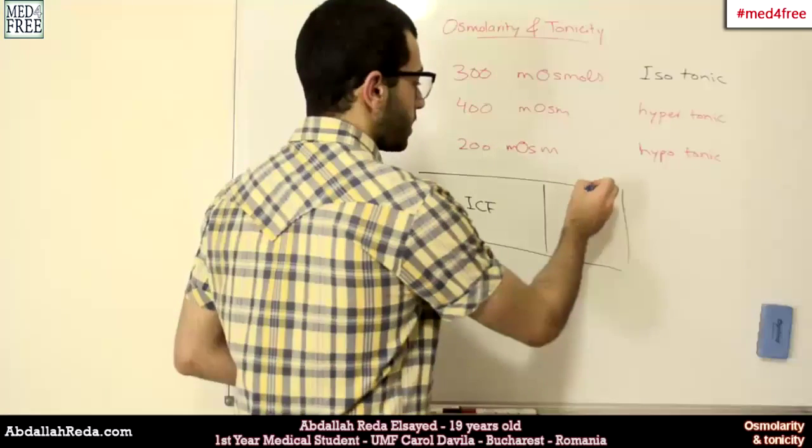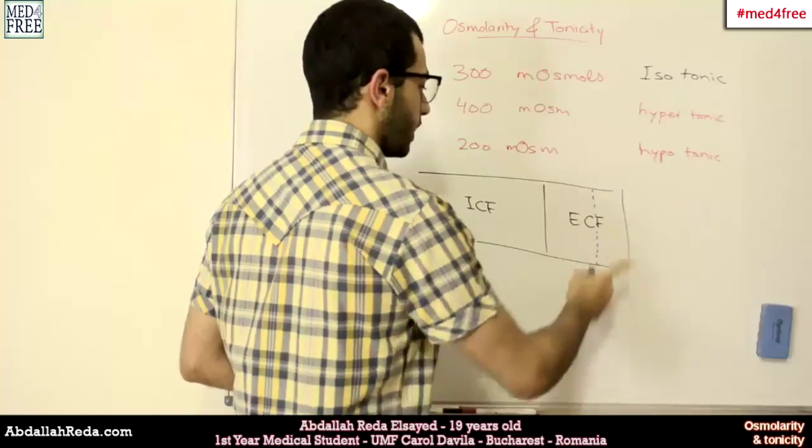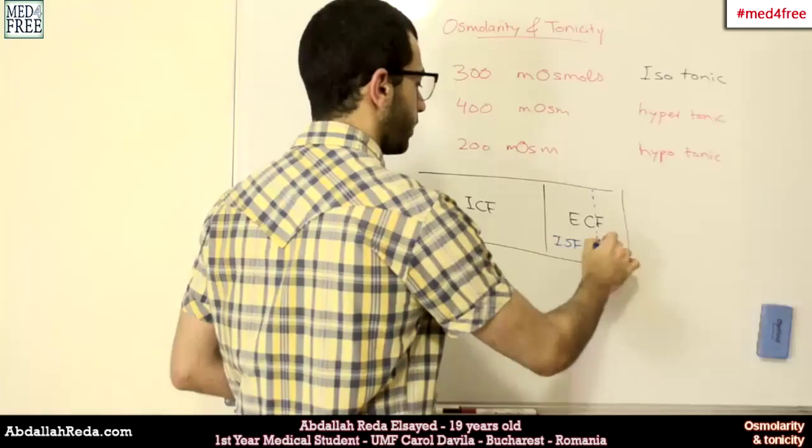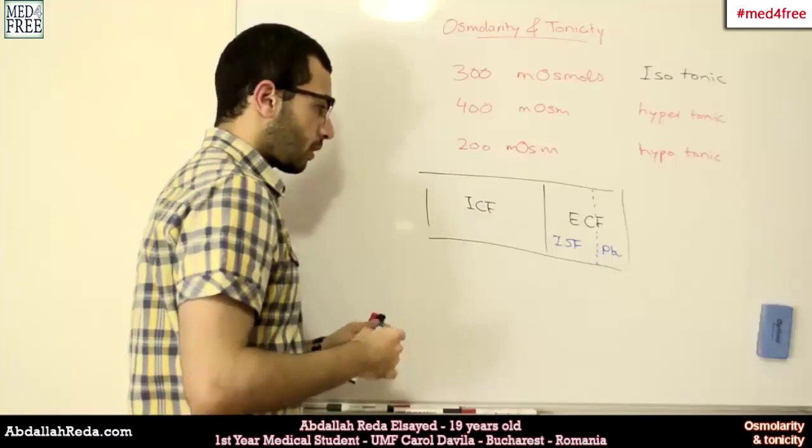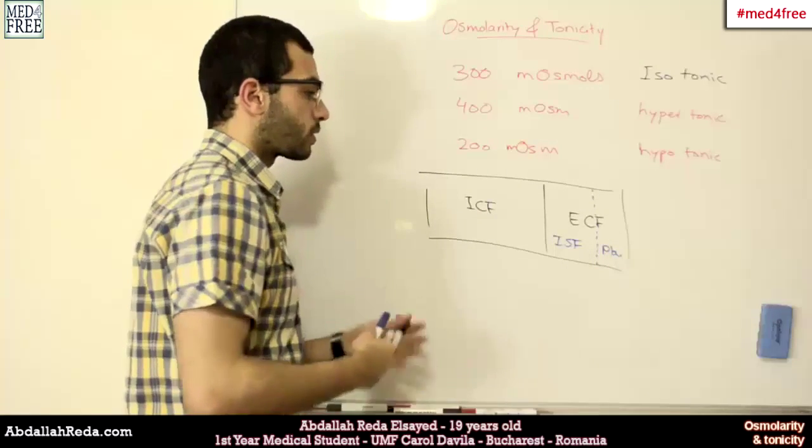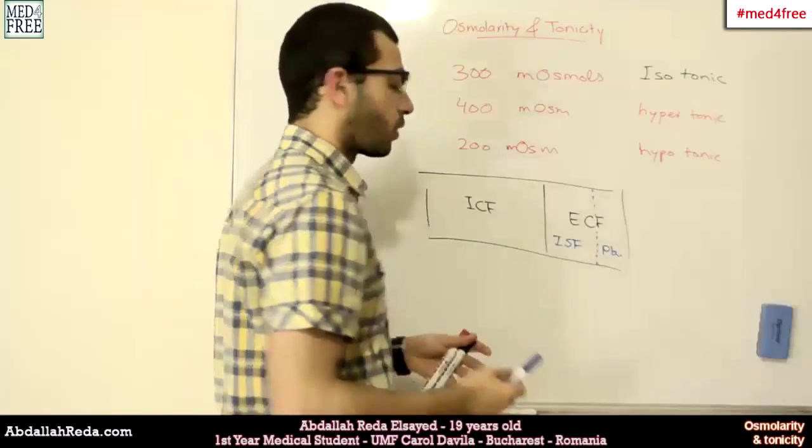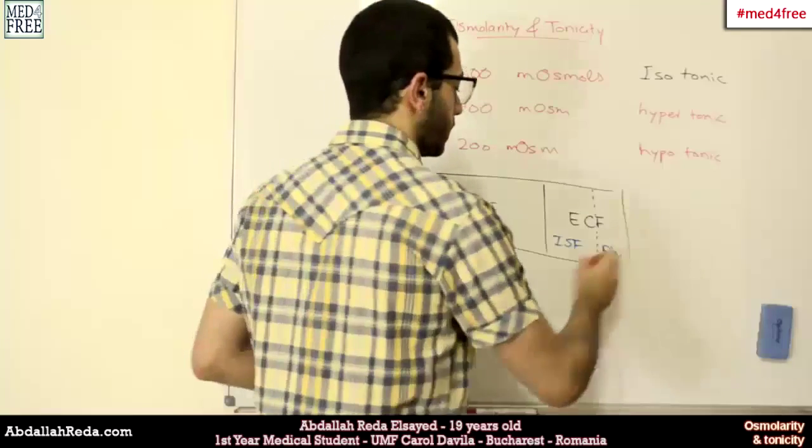Inside the extracellular fluid compartment, we mentioned that it's divided into the interstitial fluids and the plasma. And the particles between these two compartments move easily, except for one kind of particles, which is the proteins.